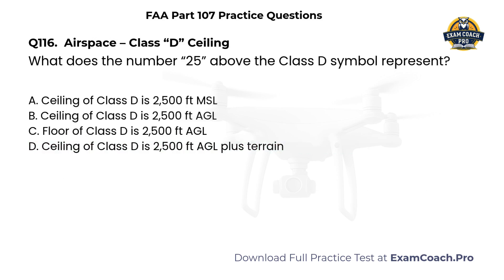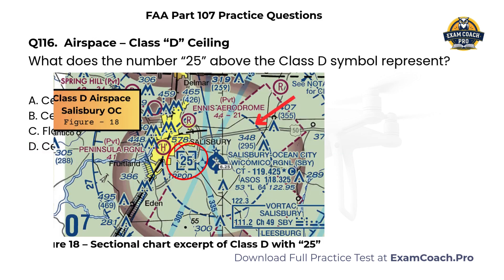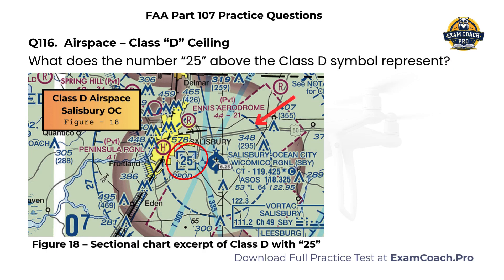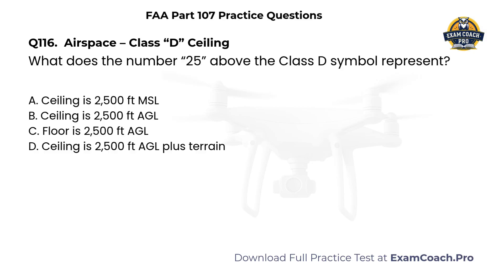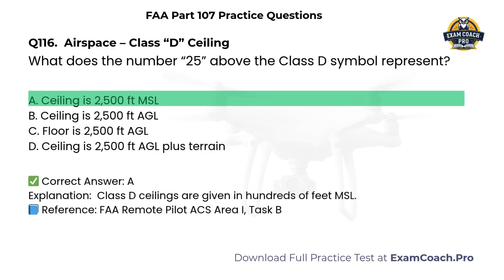Airspace. Class D ceiling. Refer to Figure 18. What does 25 above the Class D symbol represent? A. Ceiling is 2,500 feet MSL. B. Ceiling 2,500 AGL. C. Floor 2,500 AGL. D. Ceiling 2,500 plus terrain. Correct answer: A. Class D ceilings are given in hundreds of feet MSL.